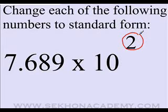We will learn how to change numbers from scientific notation to standard form. When multiplying a decimal by a power of 10, move the decimal point to the right if the exponent is positive, and to the left if the exponent is negative.